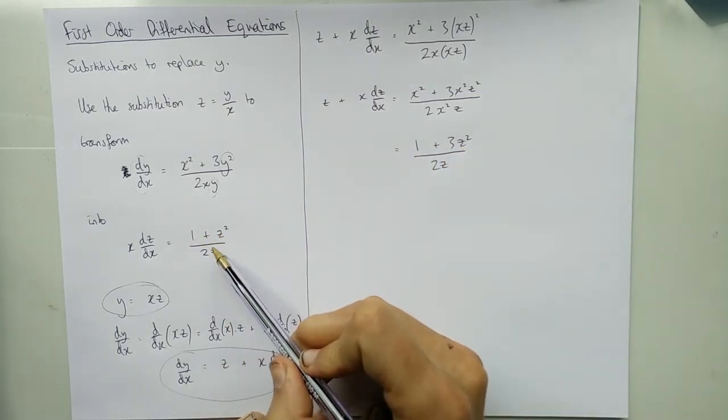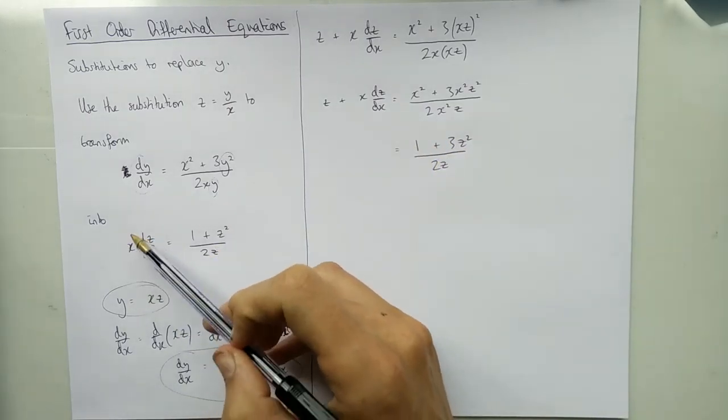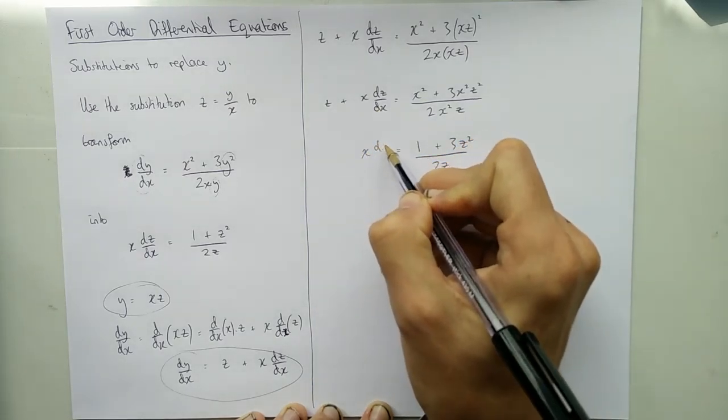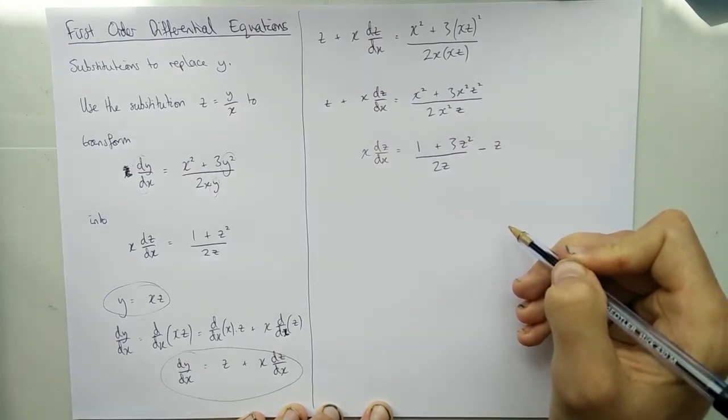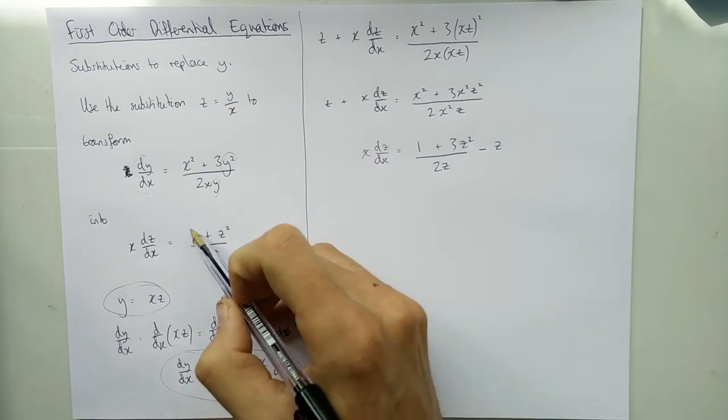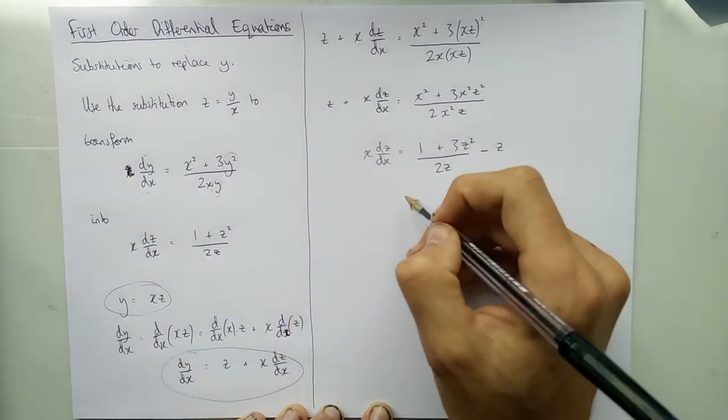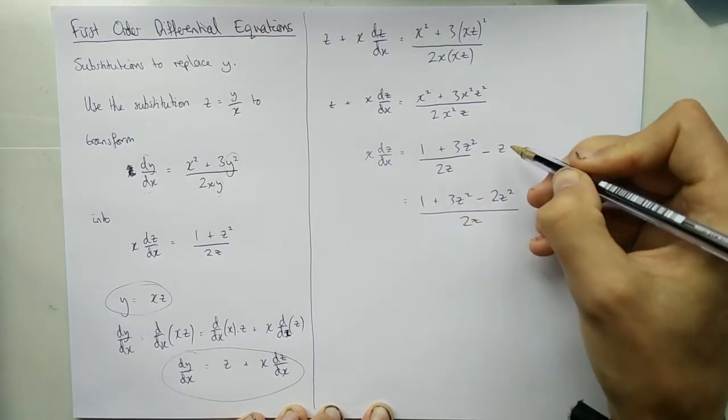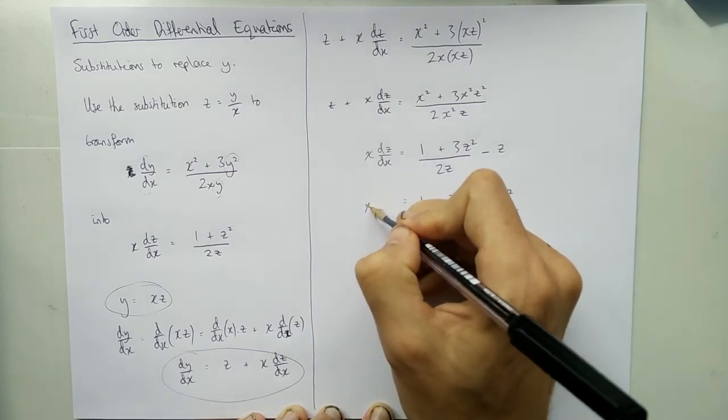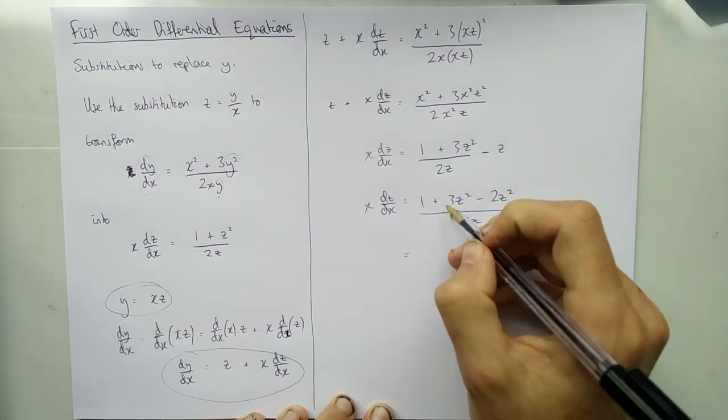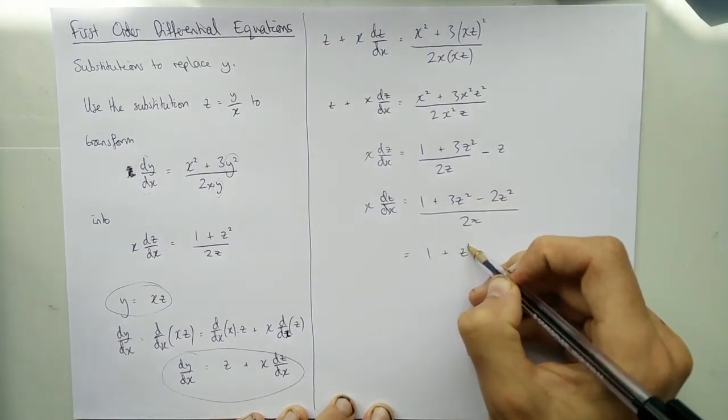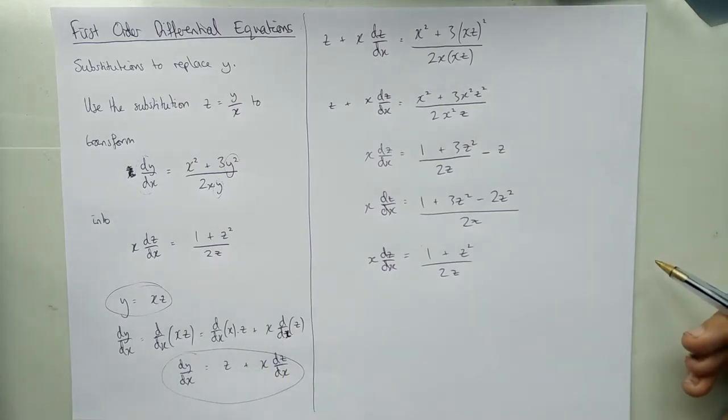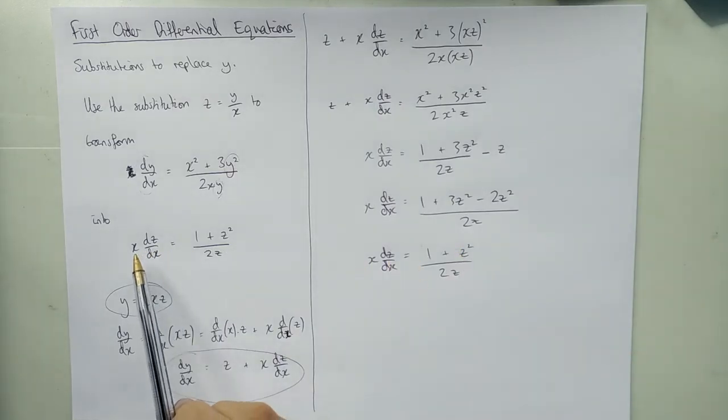We're getting closer. If you look back to what we're trying to get to, we're trying to get 1 plus z squared over 2z. We've got 1 plus 3z squared over 2z. We've got this x dz/dx term here and there's a z here. So if I move it across the other side, it will cancel down. So we take this z to the other side and make it minus z. We multiply by 2z. We get 2z squared here and now it's all over 2z. I've essentially multiplied this to get 2z squared over 2z so that can stick together. And then here we get 1 plus 3z squared so it becomes minus 2z squared, just a single z squared over 2z. And there we go, we've got what we wanted to get.